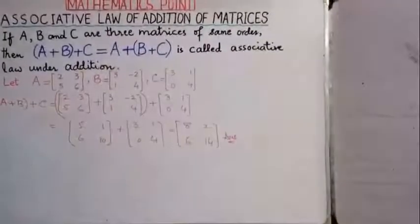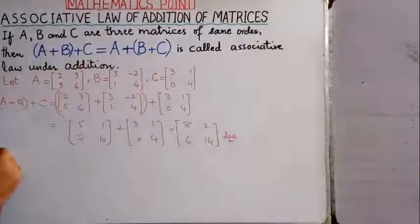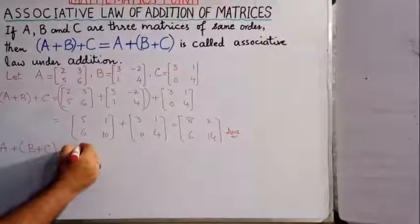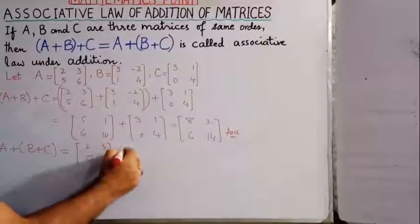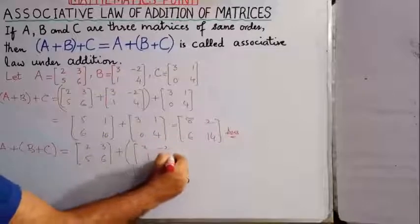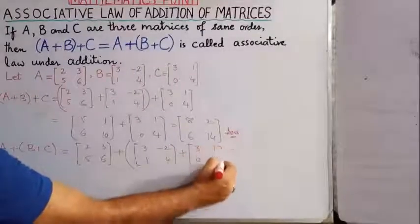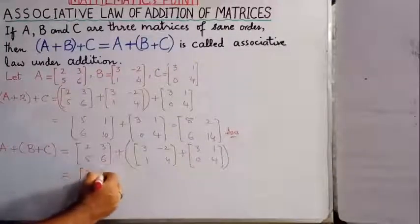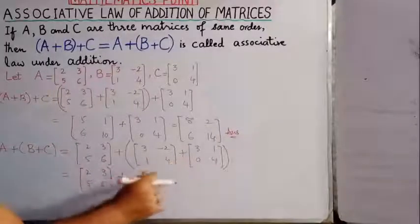Now we take the right-hand side: A + (B + C). We write matrix A as 2, 3, 5, 6, plus bracket with matrix B (3, −2, 1, 4) plus matrix C (3, 1, 0, 4). Since the bracket means we first add B and C together, let's compute that directly.